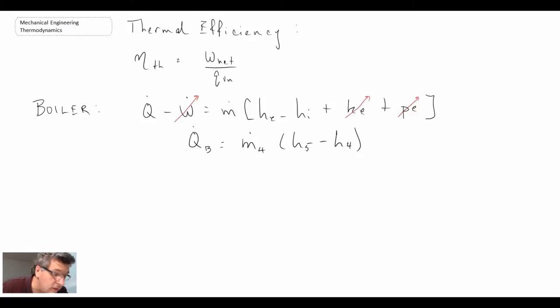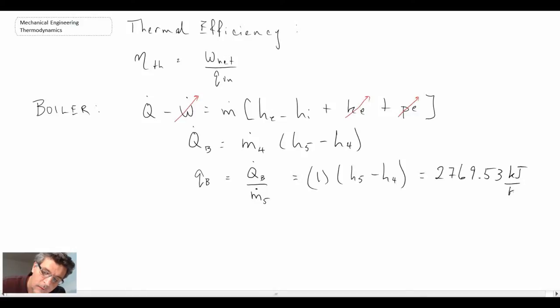So what we'll then do is on a per unit mass basis. And we know the enthalpies at both of those states. So that's per kilogram through the boiler.